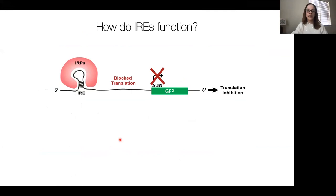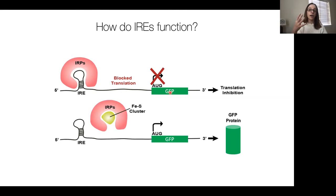So what exactly do IREs do? In cells, you can have an IRE element here which interacts with an iron response protein. When this protein is bound, we see a decrease in translation—a block in translation. However, if you have high iron levels in the cell, the iron response proteins are sequestered by that iron and move away from the IRE element, releasing that block and allowing protein translation to continue.